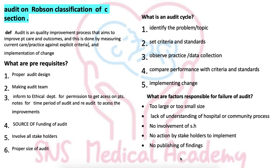Hi guys, today I am going to present the audit on Robson classification of caesarean section. Before going to do the audit, I would like to tell you about the definitions of audit, what are the prerequisites, what is an audit cycle, what are the factors responsible for failure of the audit, what's the Robson classification, how to conduct the audit, and finally what are the factors responsible for increased rate of caesarean section and how we reduce the C-section rate.